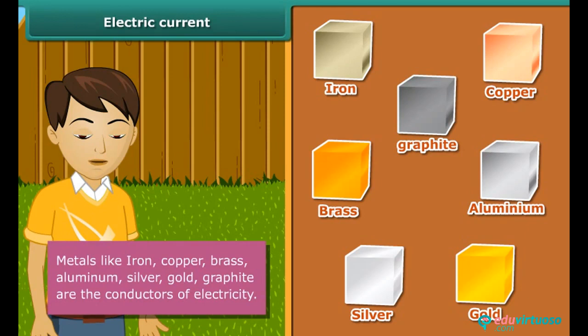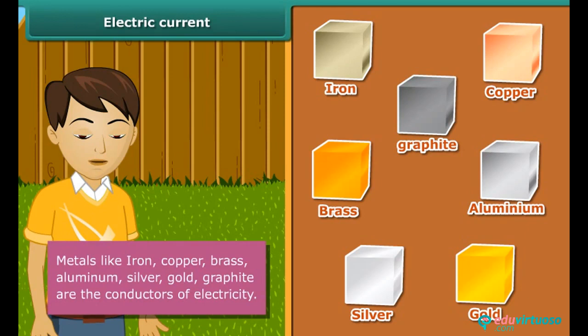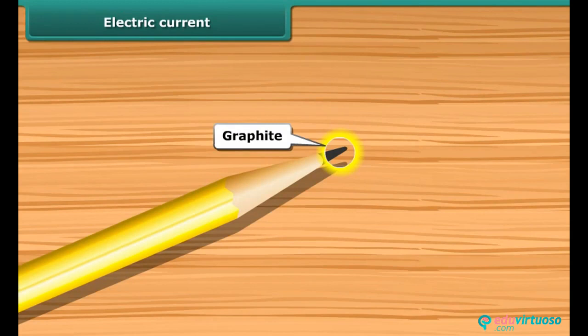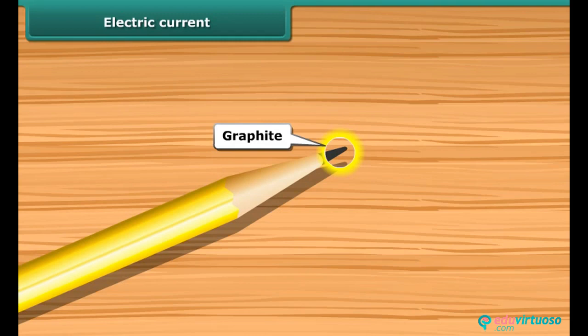The materials through which electric current doesn't flow are called insulators. Insulators are also known as non-conductors of electricity. Paper, wood, plastic, cloth, eraser, and rubber are insulators. Pencil lead is made of graphite, a form of carbon. It is a non-metal, but it is a conductor of electricity.